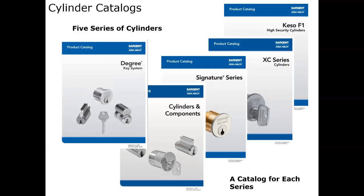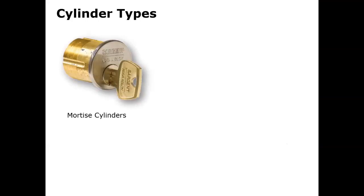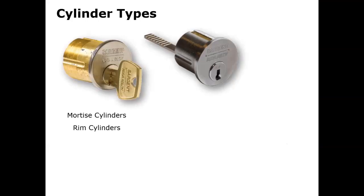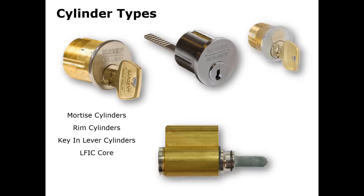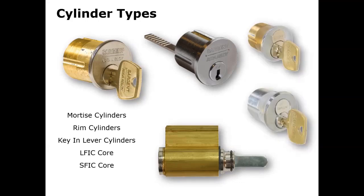The next slide shows the many types of cylinders we make. Mortise cylinders are solid brass, rim cylinders, key and knob, key and lever cylinders. And of course, removable core — large format and small format removable core — in both mortise and rim and lock sets.